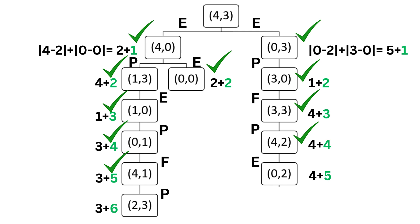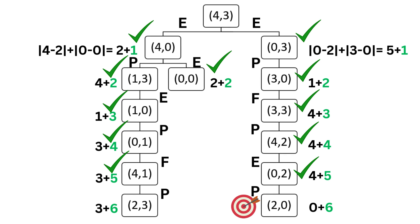A pour operation from (4, 1) gives a new state with cost 6 plus 3 equals 9. We already have state (0, 2) with cost 9, so we explore it first. After performing the pour operation from (0, 2), we reach the goal state (2, 0). The heuristic value is 0 and the step cost is 6. The path from the starting state to the goal is: empty, pour, fill, pour, empty, pour, with a total path cost of 6.